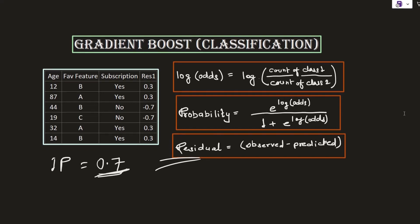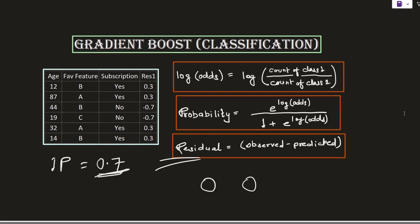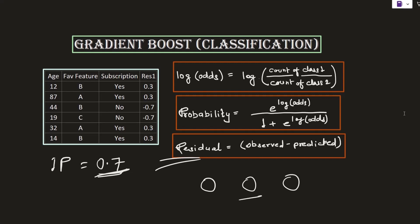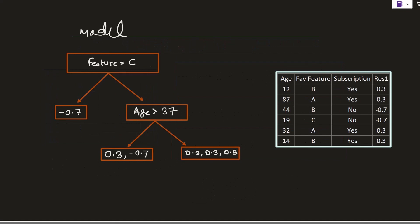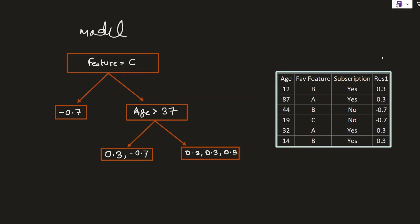Going by the foundational understanding of a boosting algorithm, we know we will keep on adding base learning models, and the job of each model is to reduce the error made by the previous model. We pass the pseudo residual values to the next model — the next decision tree — and its job is to reduce these errors. This is model 2, which is trying to reduce the pseudo residual error values representing the error made by the previous model.